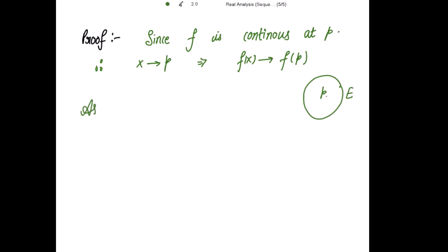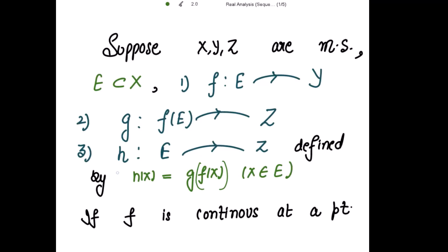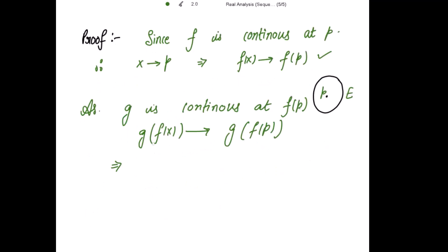Now secondly it is given to us that as g is continuous at f(p). So from here by the same remark we can write that g(f(x)) is tending to g(f(p)) which further implies that, now what is g(f(x))? It is given that h is defined by h(x) equal to g(f(x)).